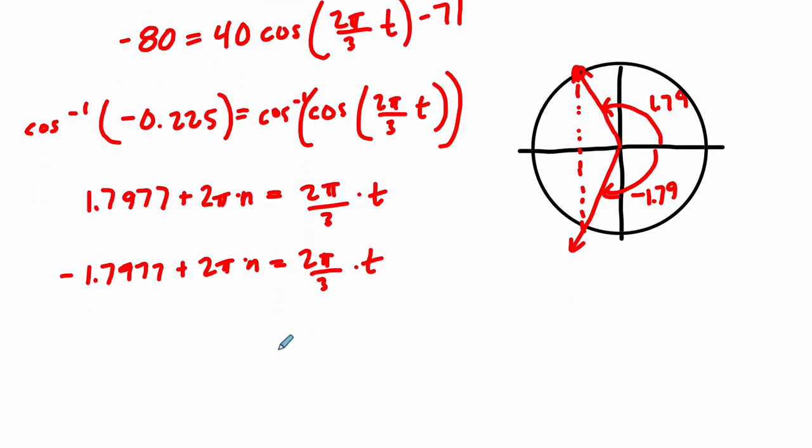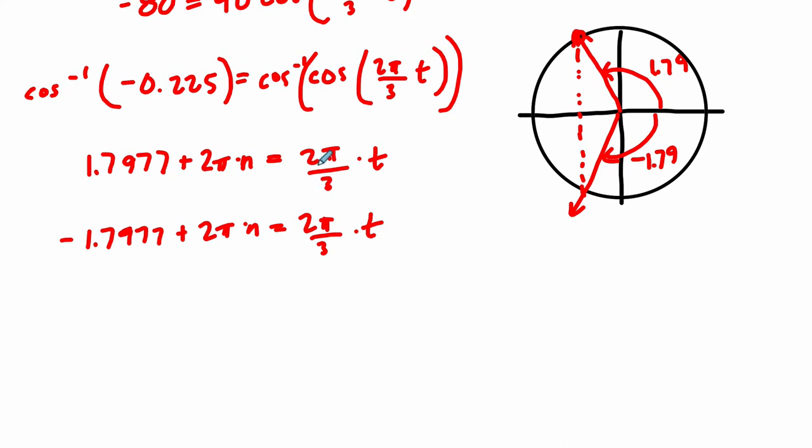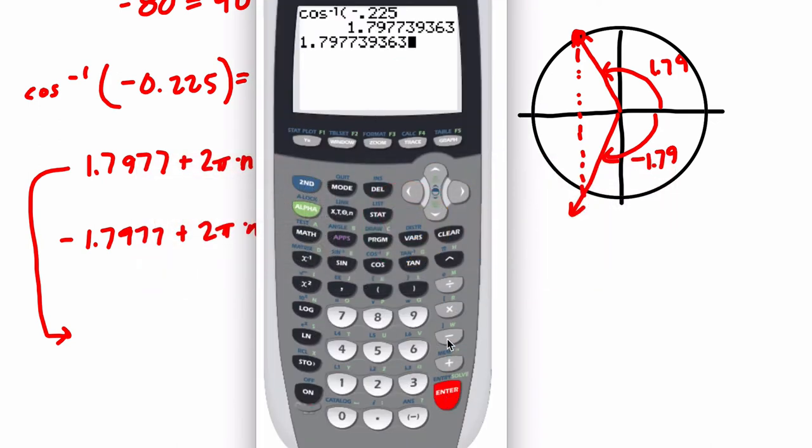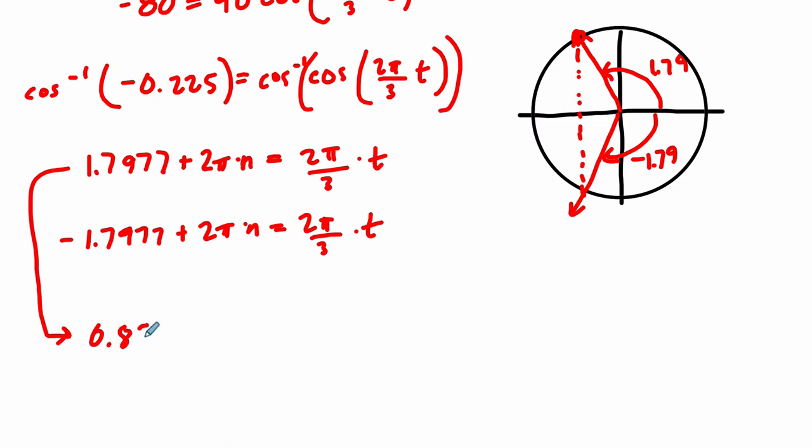Usually with angles we've done here, but these problems are a little more involved. We have to solve for t. To do that, we essentially multiply both sides by 3 over 2π. In the first one, 1.7977, multiply it by 3 and then divide by 2π. We get 0.8583, plus, and here when you divide by 2π over 3, the 2π's cancel out and you get 3n. And then you get the opposite thing here, negative 0.8583 plus 3n, and those are our timestamps.